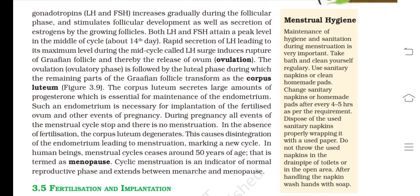The ovulatory phase is followed by the luteal phase, during which the remaining part of the Graafian follicle transforms into the corpus luteum. The corpus luteum secretes large amounts of progesterone, essential for maintenance of the endometrium — necessary for implantation of a fertilized ovum and other events of pregnancy. In the absence of fertilization, the corpus luteum degenerates, causing disintegration of the endometrium leading to menstruation, marking a new cycle. Menstrual cycle ceases around 50 years of age — termed menopause.